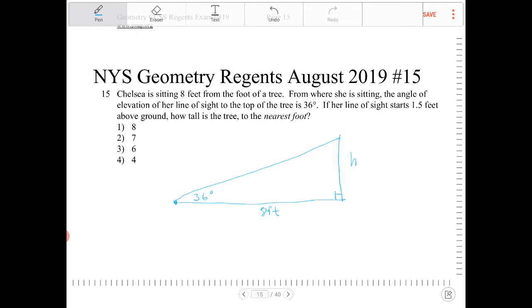If her line of sight starts 1.5 feet above ground, I'm going to have to adjust this. So that means this is going to be 1.5.